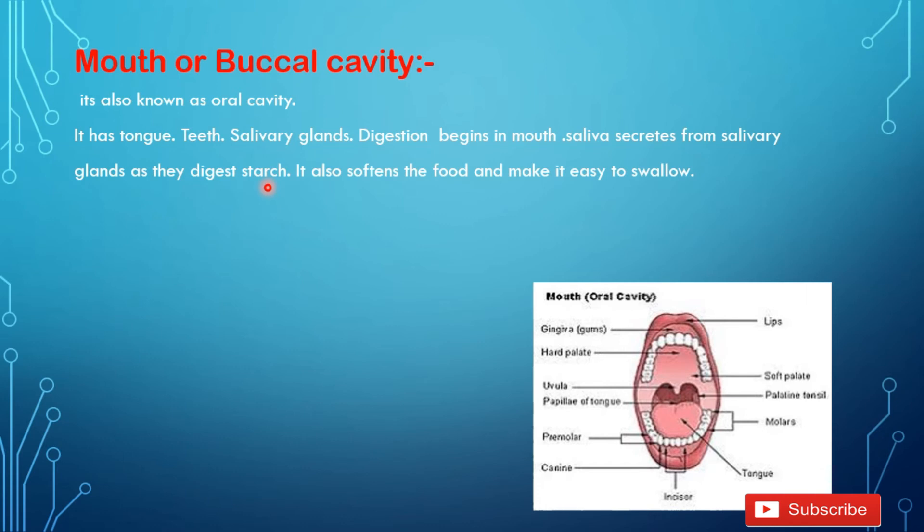What is starch? It is a complex form of carbohydrate. As I told you earlier, carbohydrate is a source of energy and a basic component of our balanced diet. Its complex form is starch, and starch has to be converted into its simplest form, which is glucose.